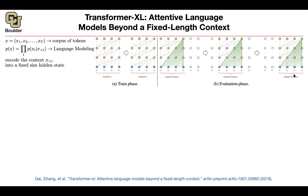So you always have a limited context for transformers. The idea of this paper is that you want to extend the context, and that's why you have XL — extra long context.